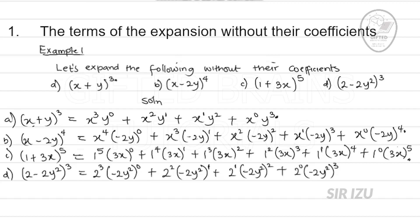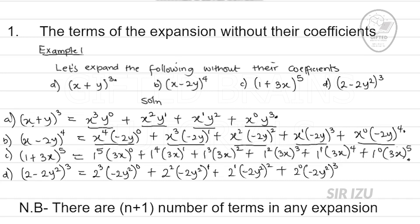For question (a), n is 3 and we have 4 terms. For question (b), n is 4 and we have 5 terms. It is then obvious: if n is 3 we have 4 terms, if n is 4 we have 5 terms, if n is 10 we have 11 terms. We can conclude that there are n plus 1 number of terms in any expansion.